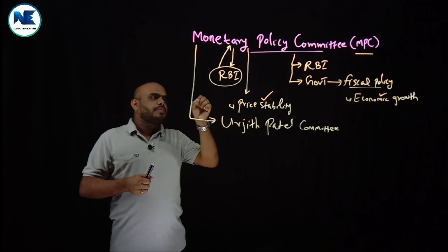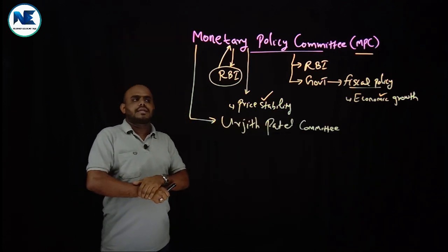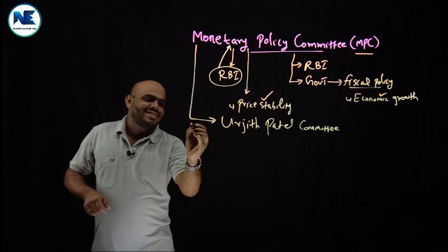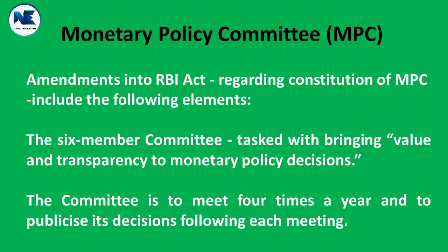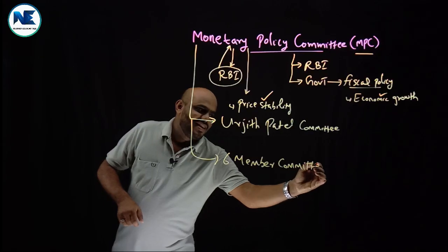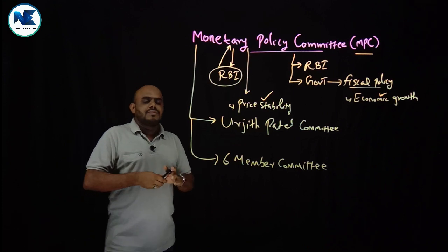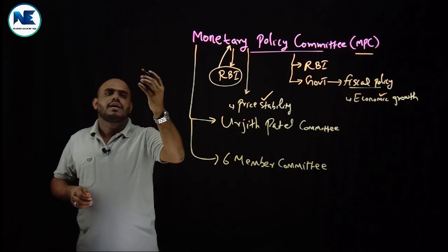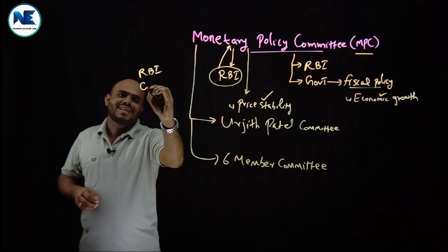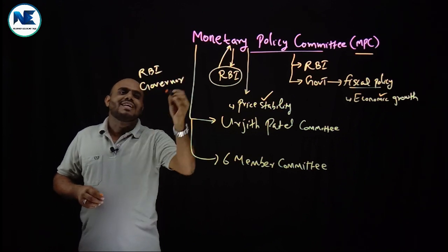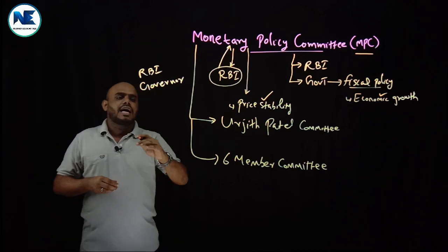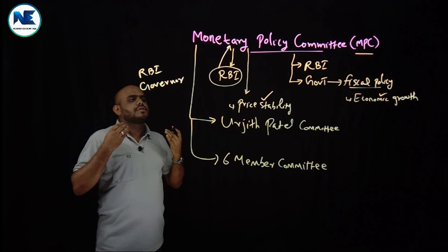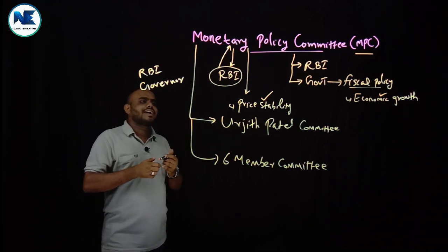So, the Monetary Policy Committee was formed through an RBI Act amendment as a six-member committee. Previously, the monetary policy was designed under the headship of the RBI Governor, along with deputy governors and some other technical staff - meaning the RBI Governor essentially had monopoly in designing monetary policy.